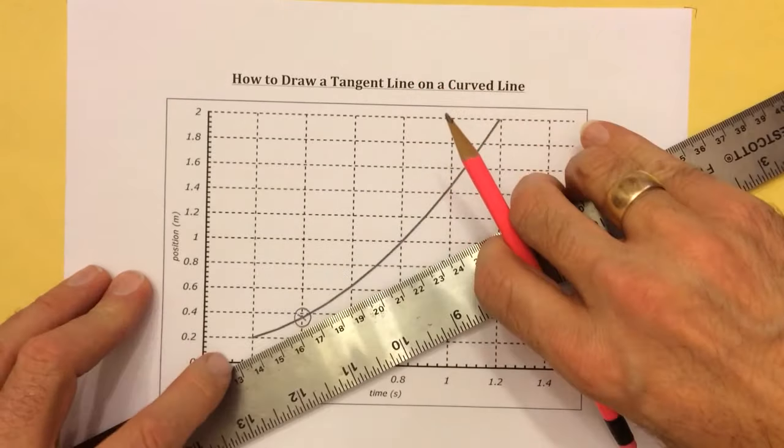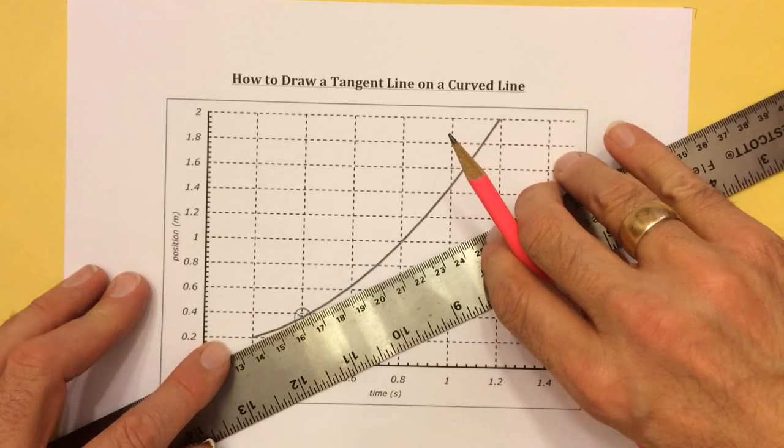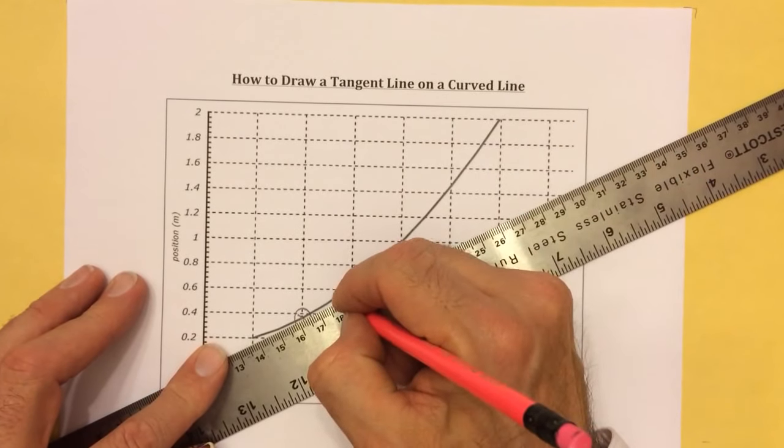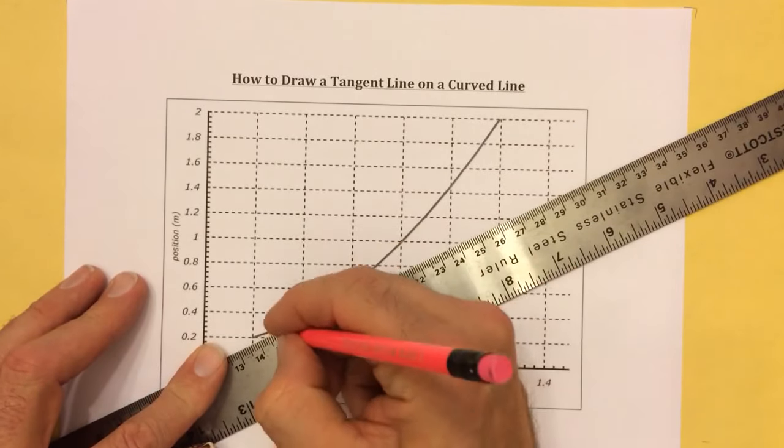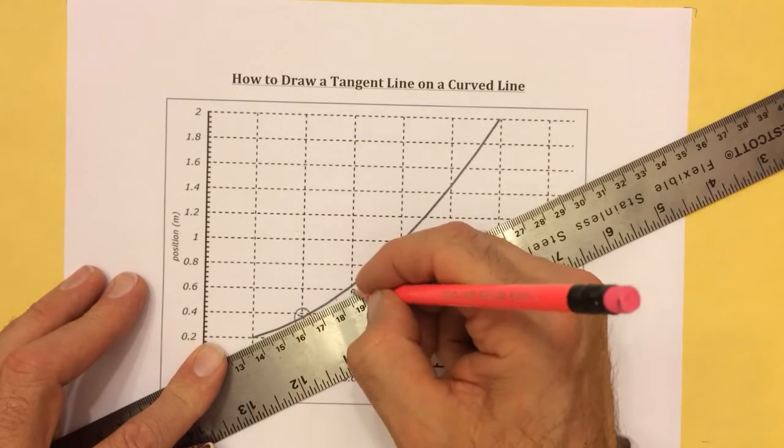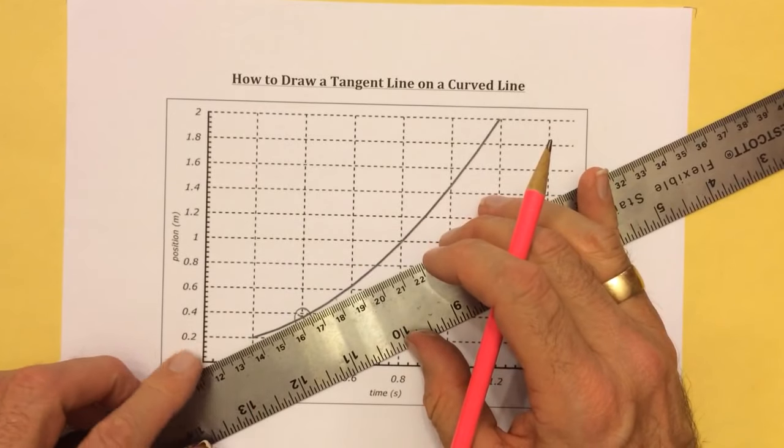So put the ruler on this side. And you need to arrange the ruler such that this little space right here between the ruler and the line and this space over here is kind of a wedge, that those two wedges are exactly alike.